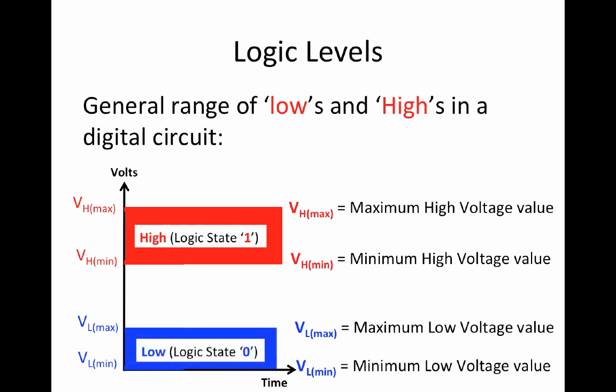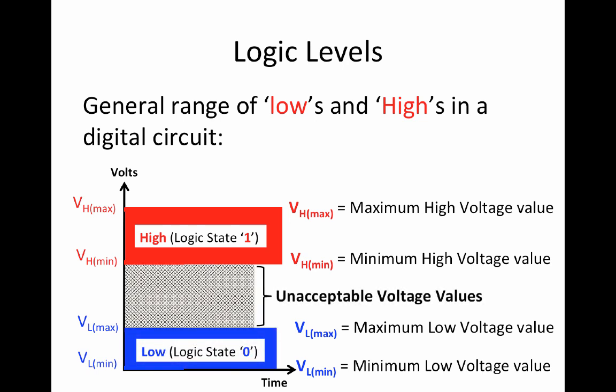The voltage values between VLmax and VHmin are unacceptable signal voltages for proper operation. Any signal voltage in this range can appear either as a high or a low. This would lead to errors.